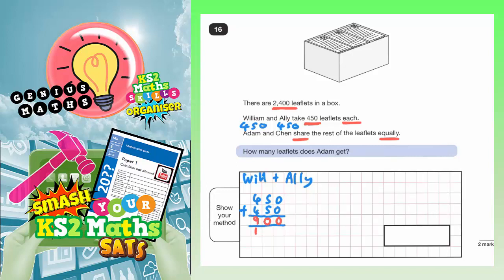William and Ali have 900 leaflets between them. Now what we need to do is subtract that 900 from the 2,400, which is here.